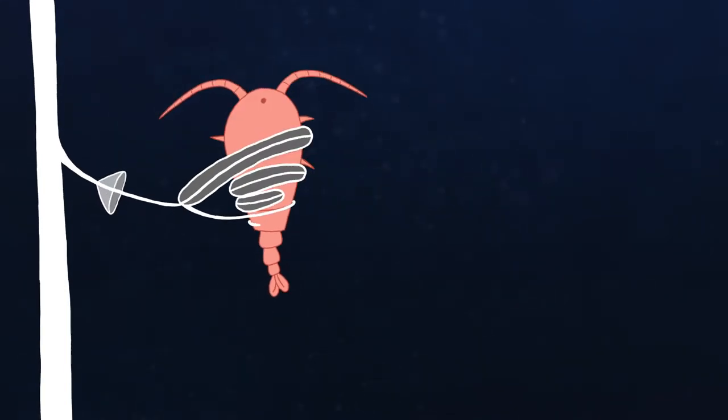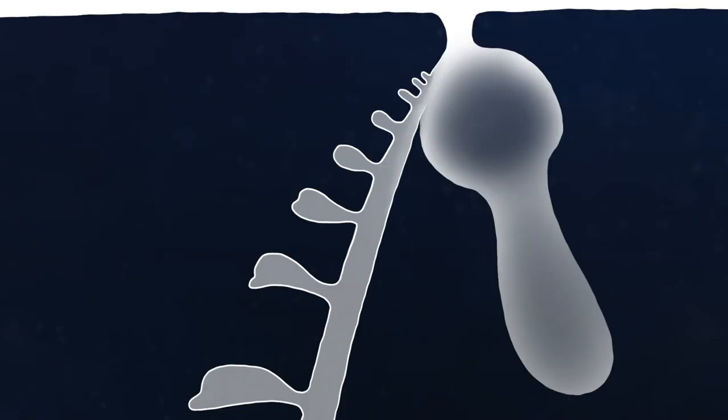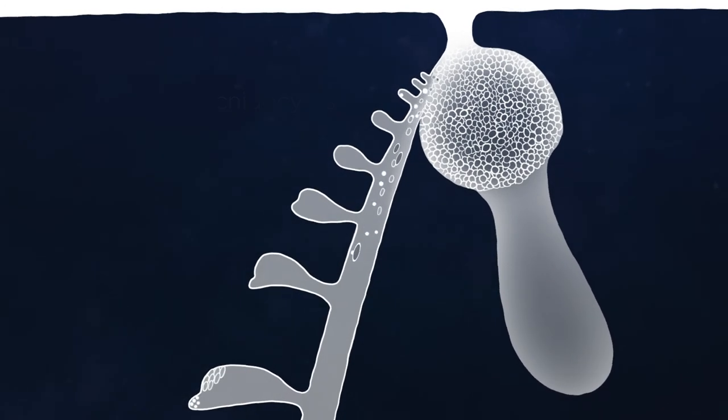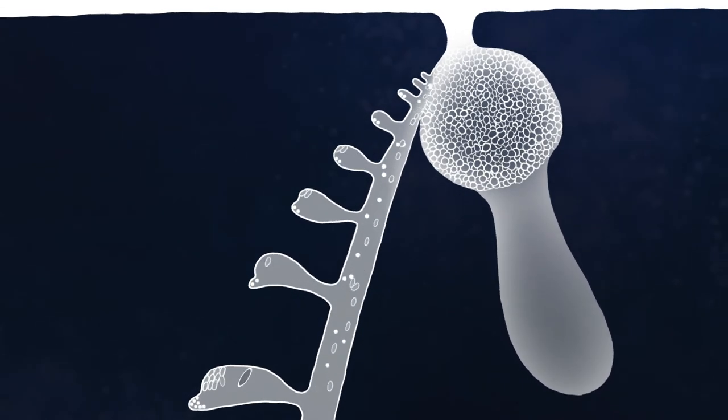Like other cnidarians, siphonophores' tentilla subdue prey using nematocysts, which need to be assembled and loaded. At the base of the feeding bodies, siphonophores produce specialized cells that carry nematocysts, called nidocytes. Immature nidocytes travel down the tentacle, building their nematocysts inside the cell, changing shape and size as they go.